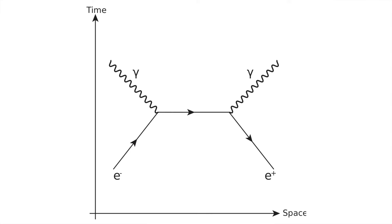"I did not take the idea that all the electrons were the same one from him as seriously as I took the observation that positrons could simply be represented as electrons going from the future to the past in a back section of their worldlines. That I stole." In fact, this idea is so integral to Feynman diagrams that positrons receive backwards arrows in their representation, whereas electrons receive forward arrows. The same is true for all particles of antimatter and matter respectively, because just like positrons, all antiparticles behave like time-reversed versions of their counterparts.